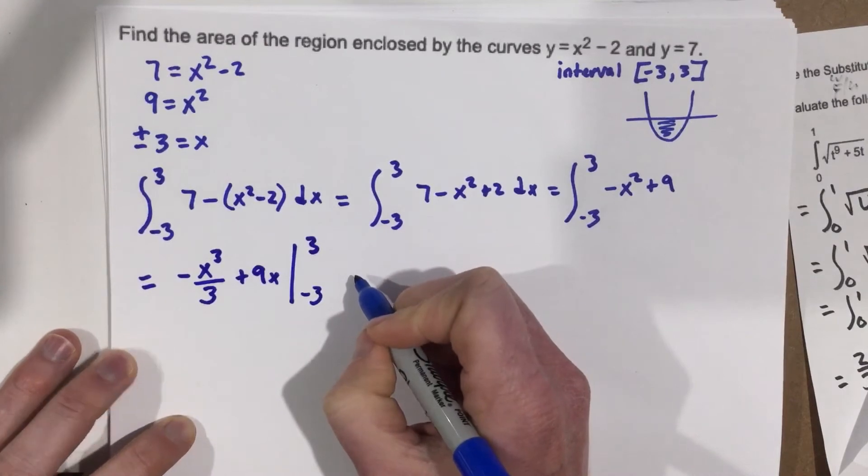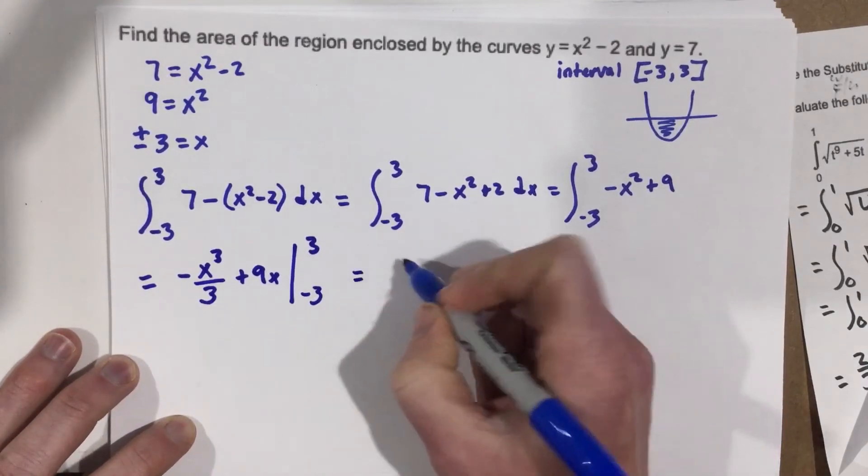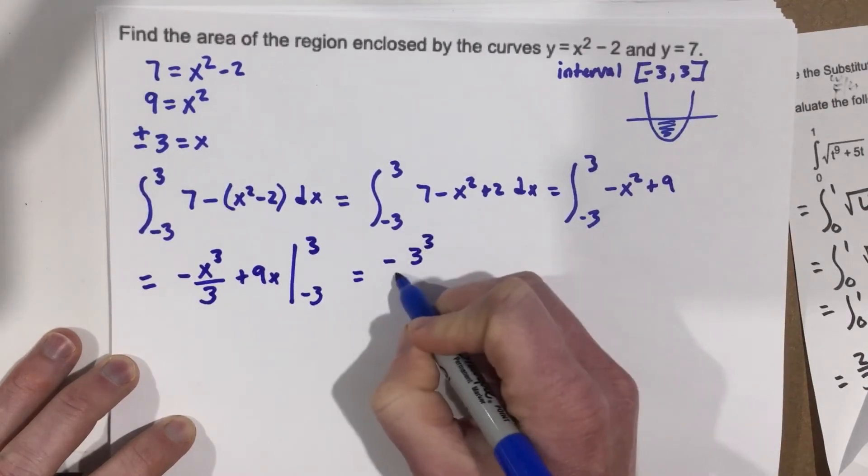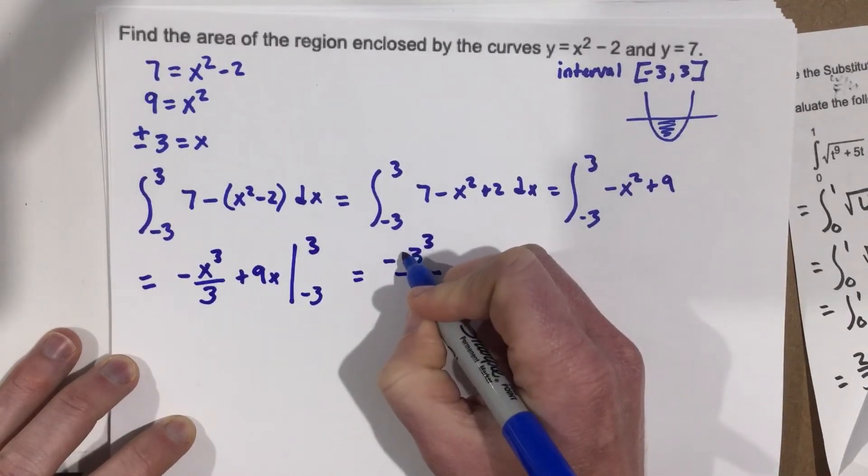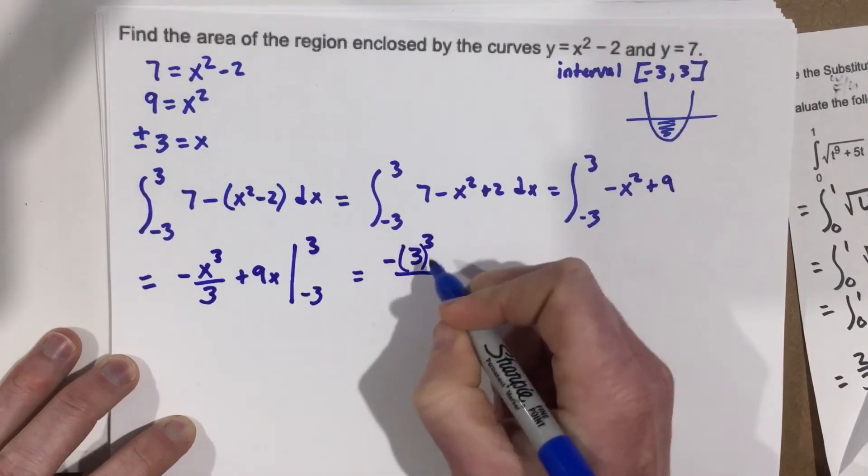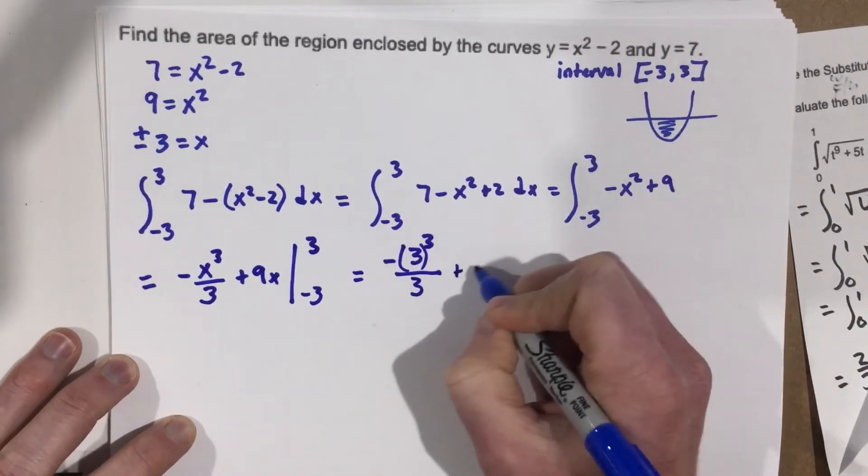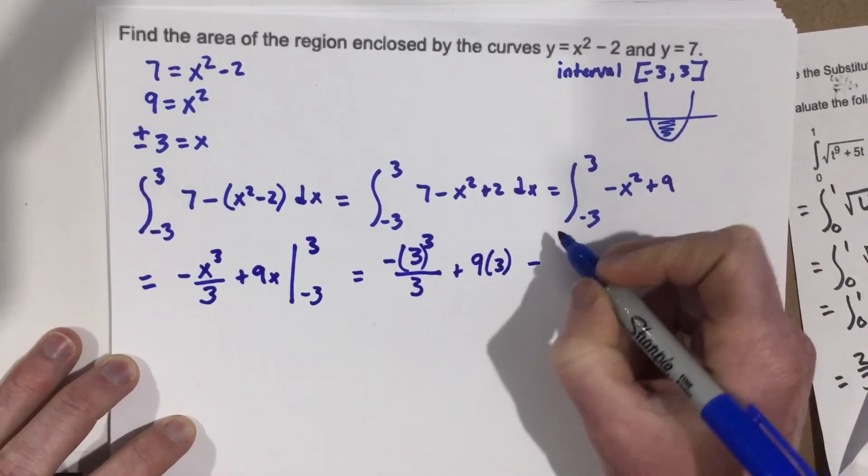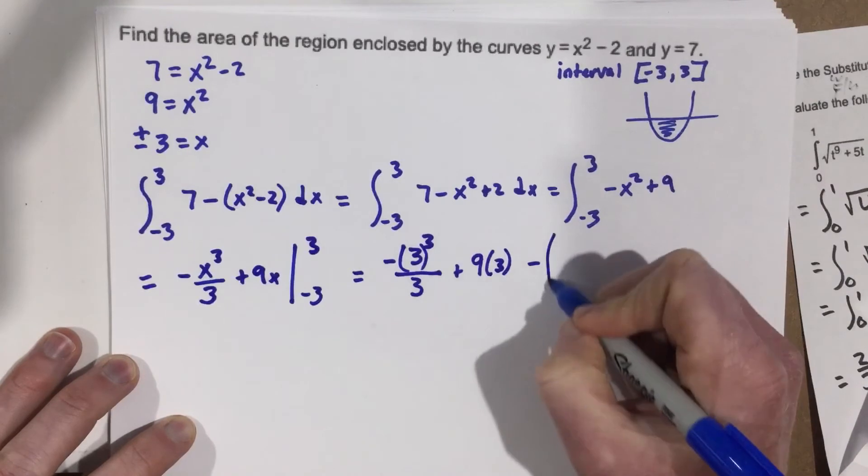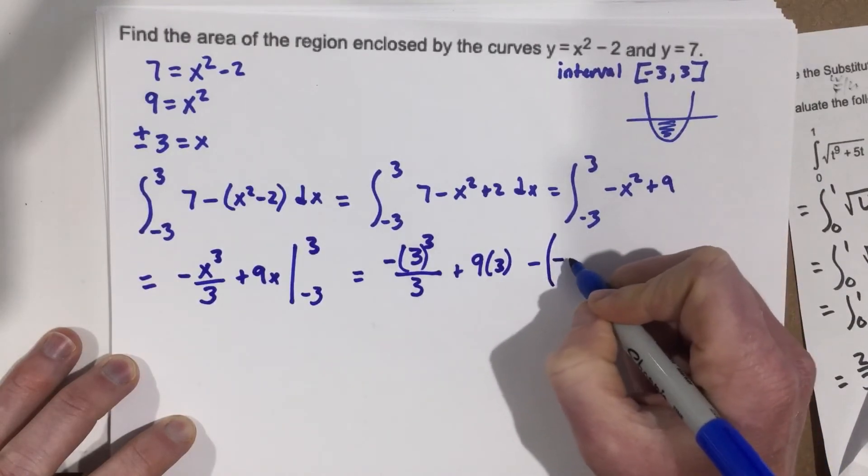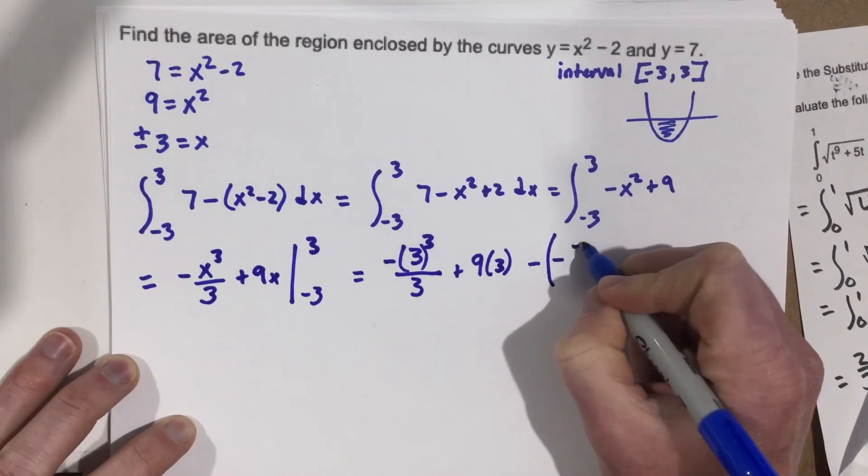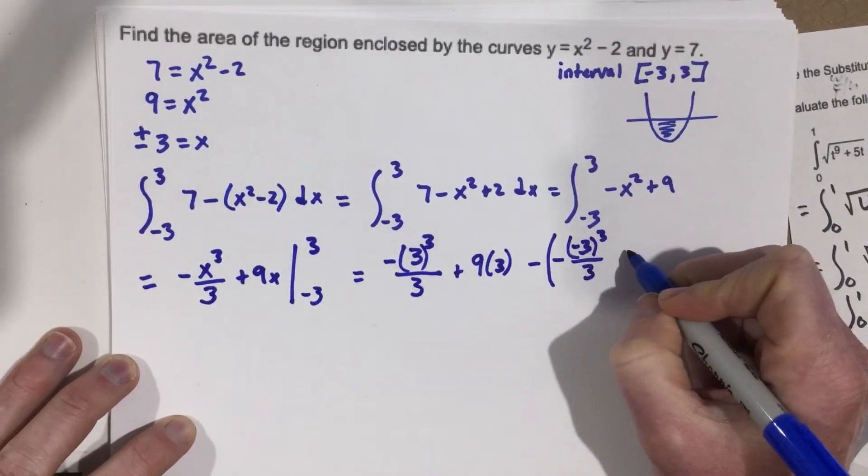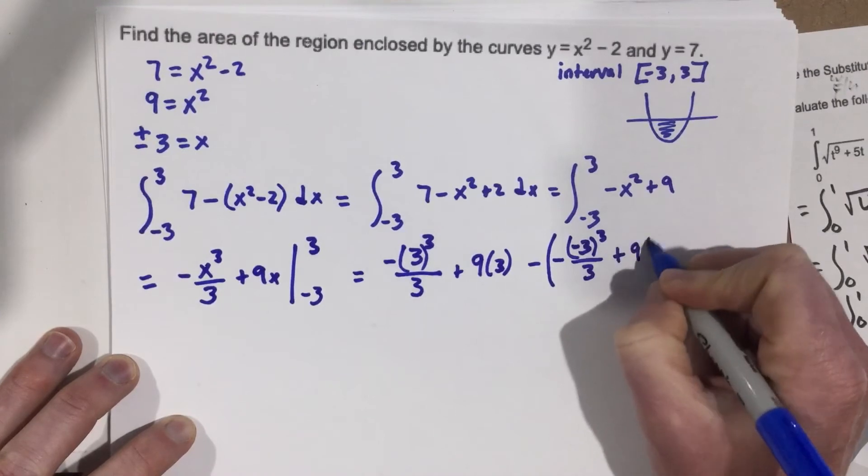And that's from negative 3 to 3. We're going to evaluate that and say that we know that this is going to equal negative 3 cubed over... I better put this in parentheses because I know that I'm doing that 3 being cubed. Plus 9 times 3 minus... And we're subtracting negative 3 cubed over 3 plus 9 times negative 3.